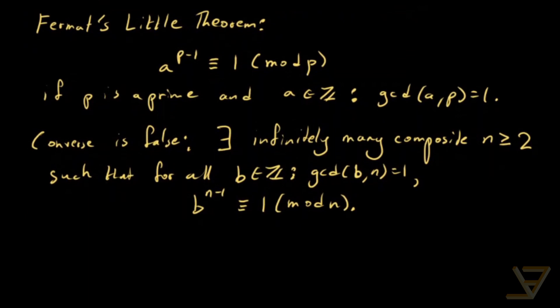And if this is true for all such b, then n is called a Carmichael number. And there are infinitely many of these, though the proof is quite difficult.